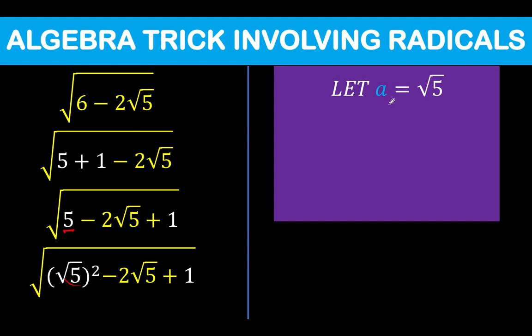If we let a dummy variable a be equal to this square root of 5, then this result here can now be written as this.